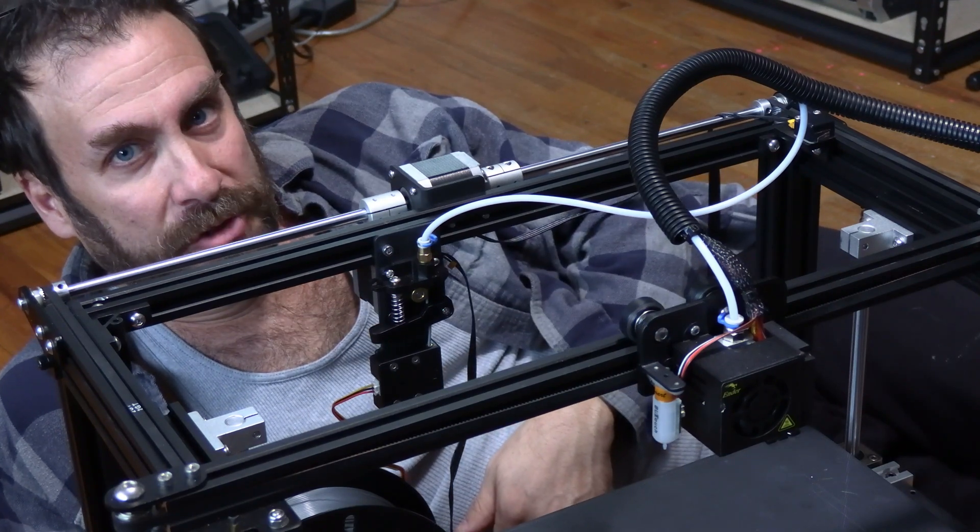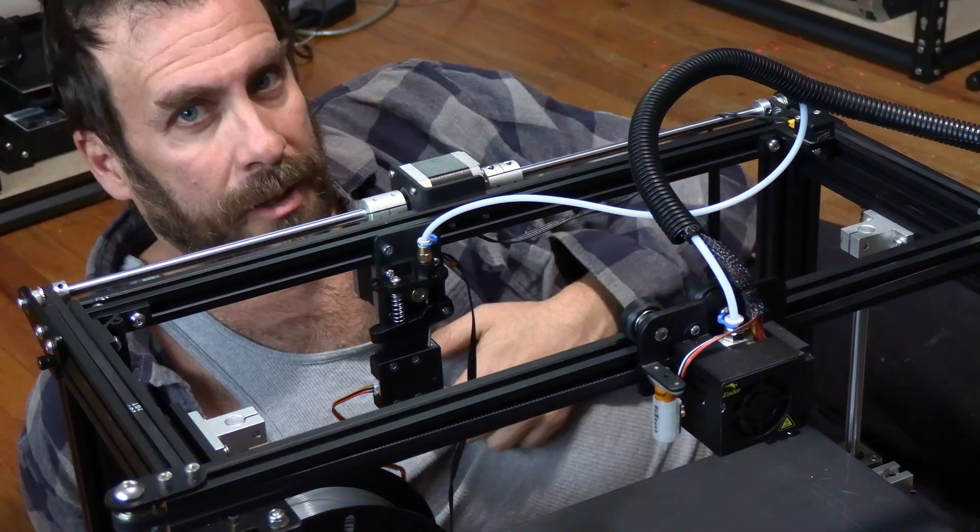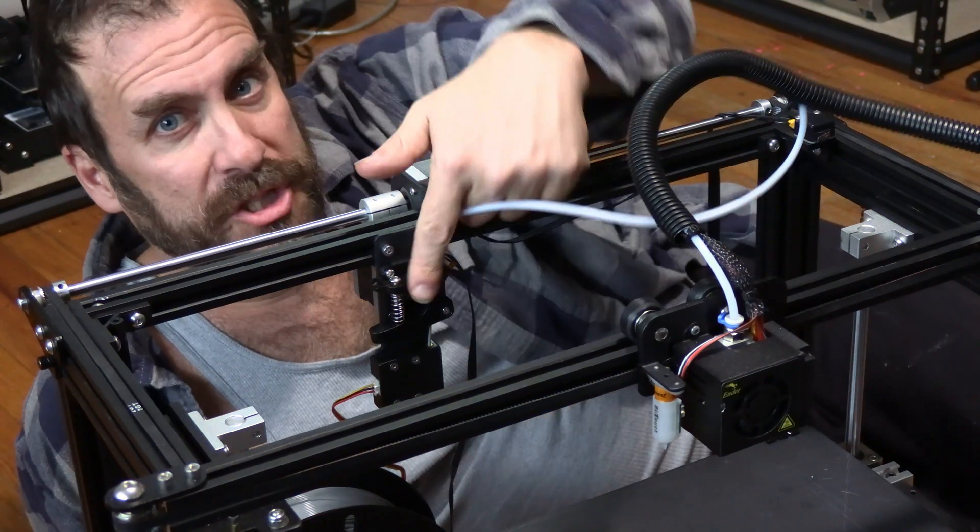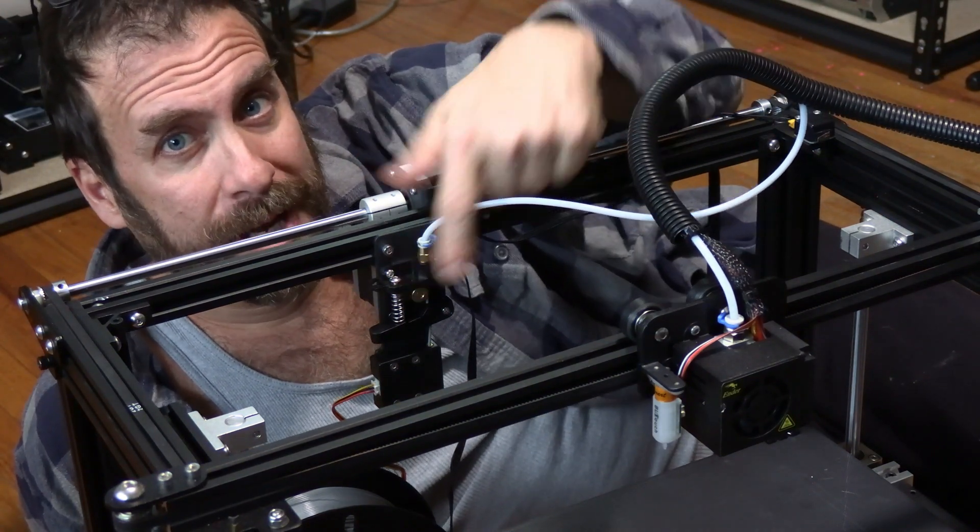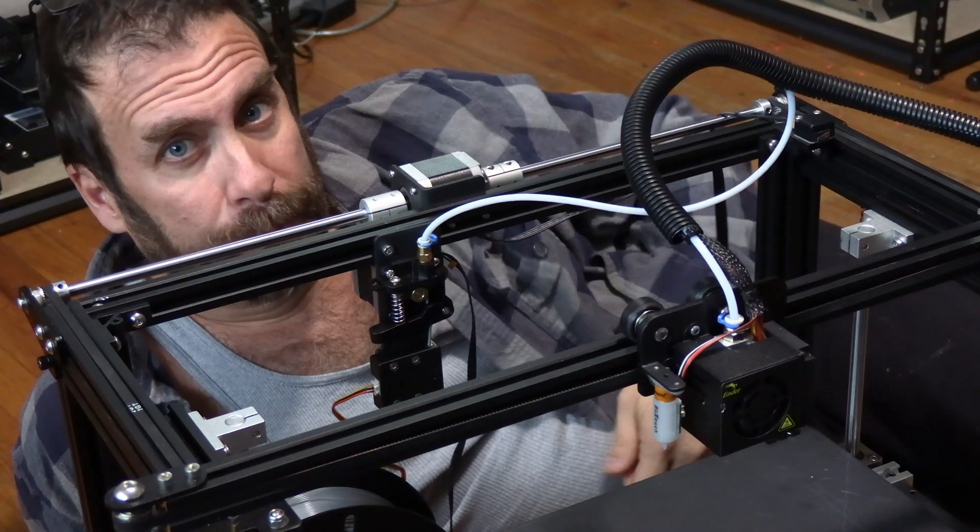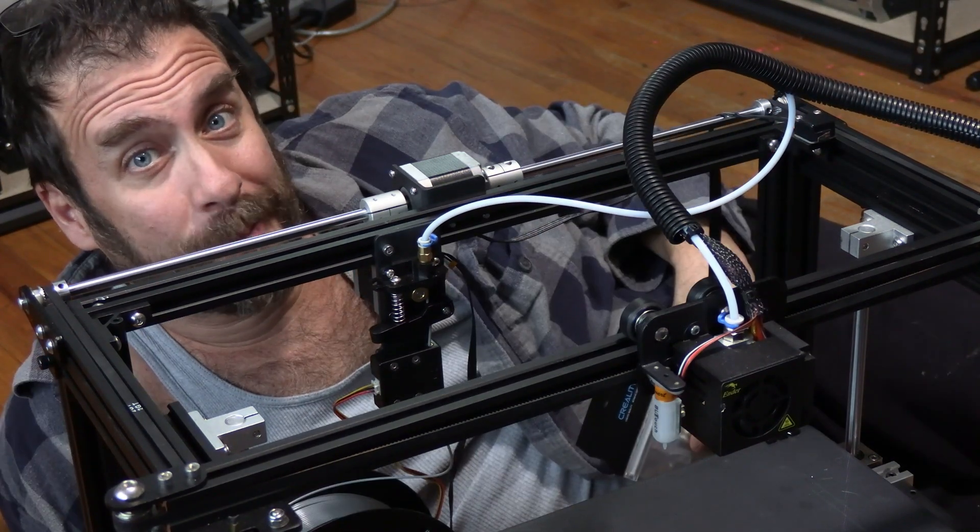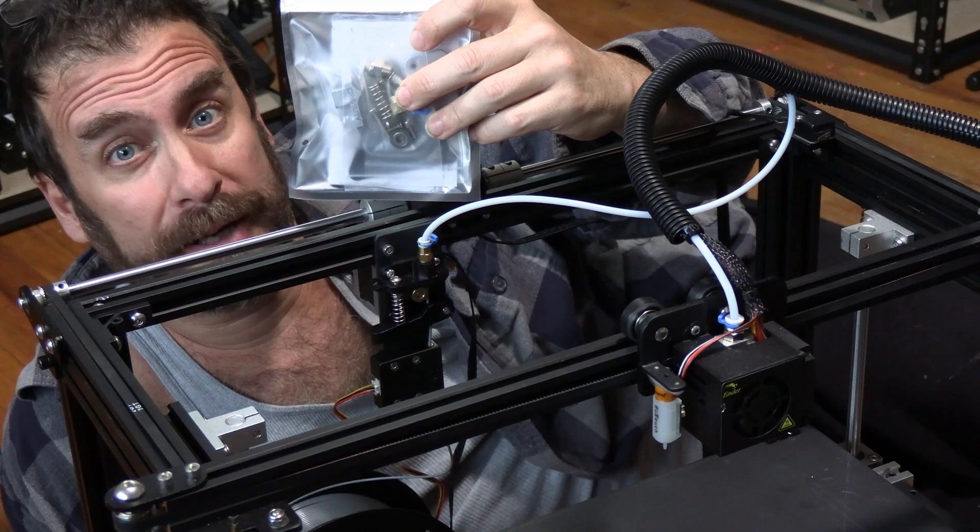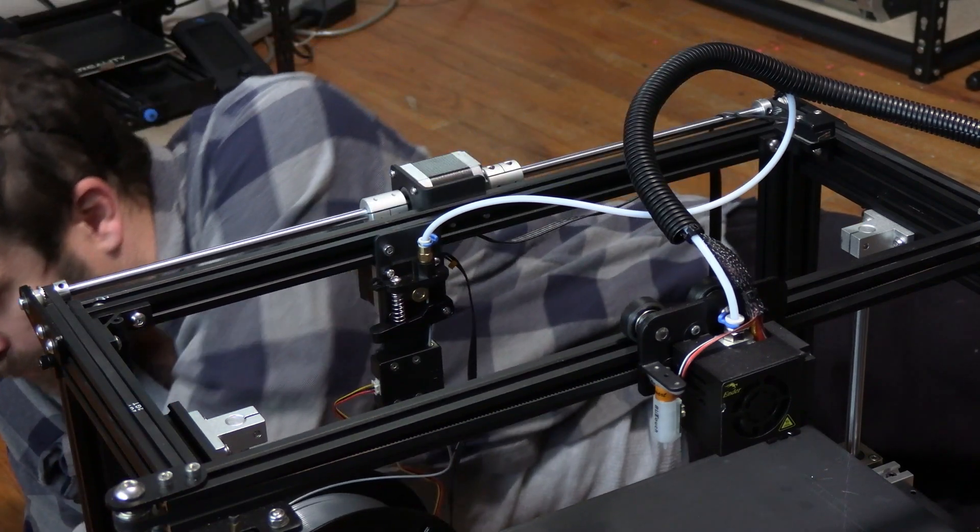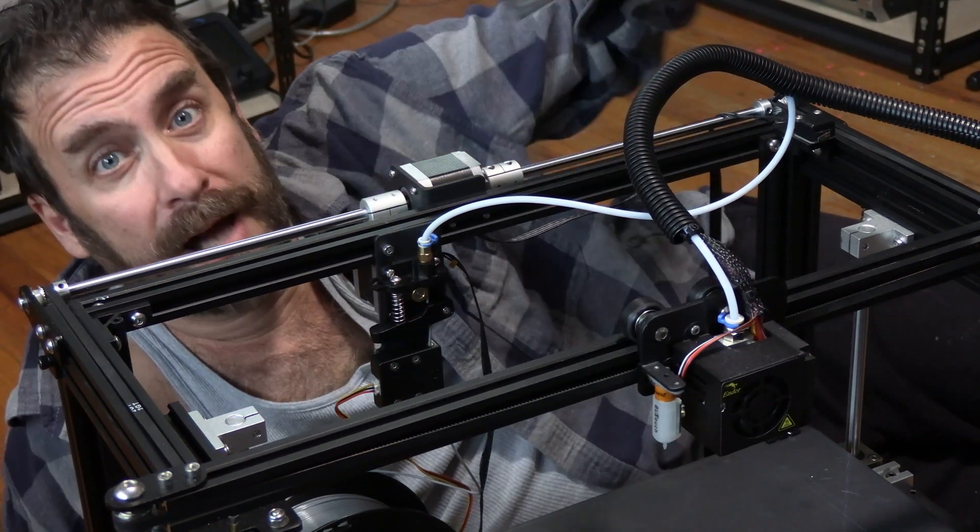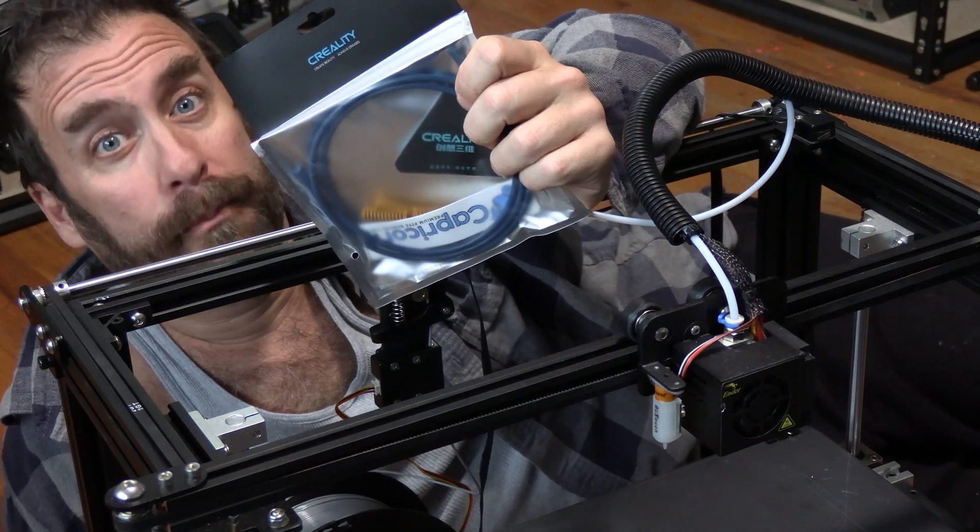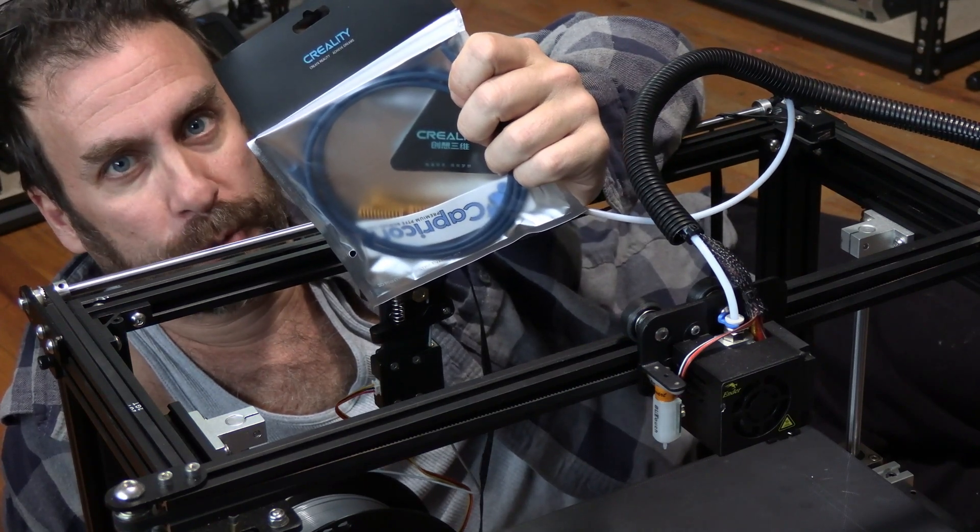This is the gigantic Creality Ender 5 Plus. We are going to change this cheap plastic extruder and this cheap white Bowden tube and replace them with an all-metal Creality branded extruder and the Creality branded Capricorn blue PTFE Bowden tube.